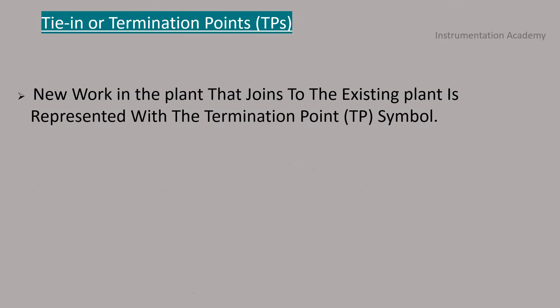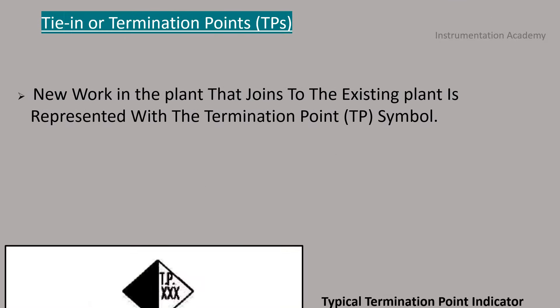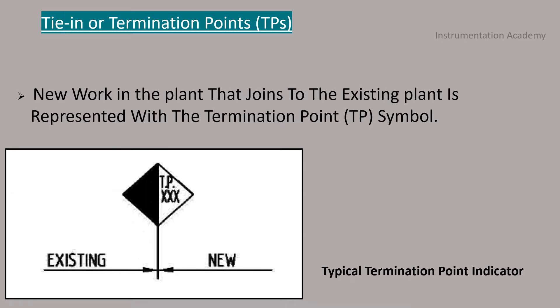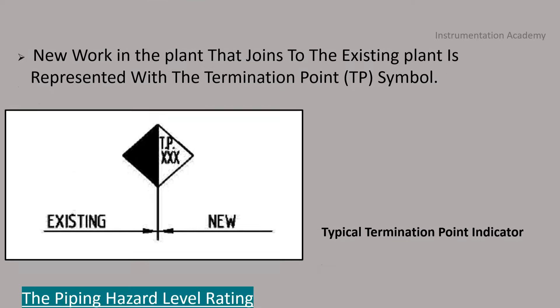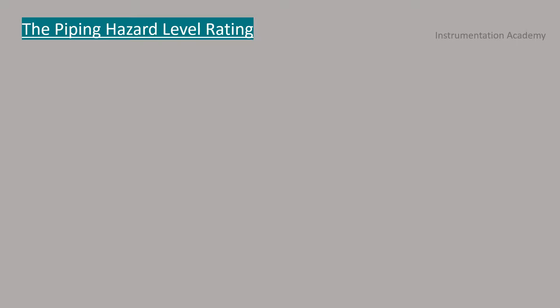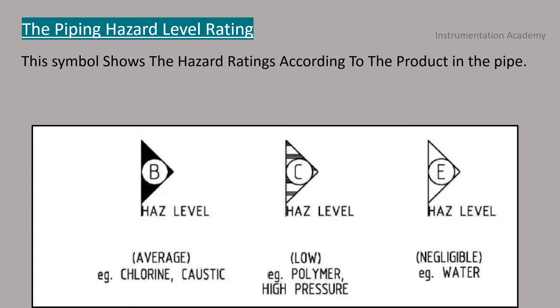Tie-in or termination point. New work in a plant that joins to the existing plant is represented with the termination point. The piping hazard level rating. This symbol shows the hazard ratings according to the product in the pipe. This figure shows the main hazard level ratings.